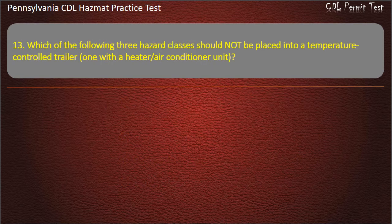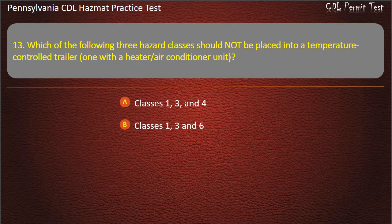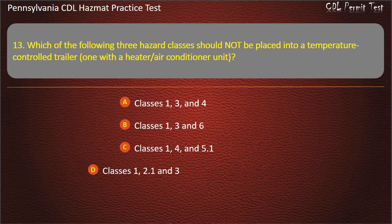Question 13. Which of the following three hazard classes should not be placed into a temperature control trailer with a heater or air conditioner unit? Options: Classes 1, 3, and 4; Classes 1, 3, and 6; Classes 1, 4, and 5.1; Classes 1, 2.1 and 3. Answer: Classes 1, 4, and 5.1.